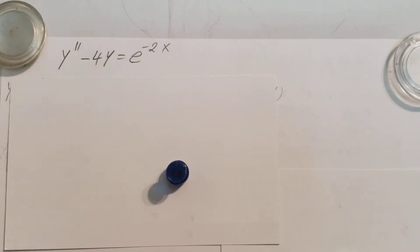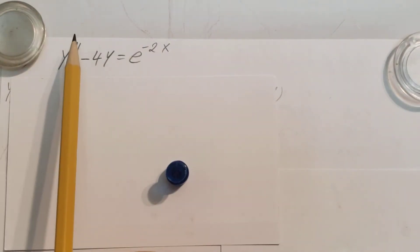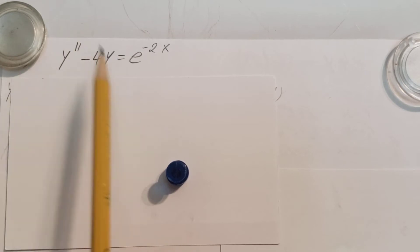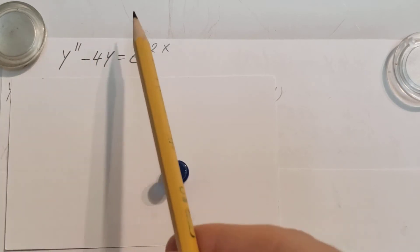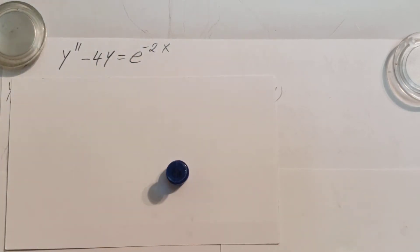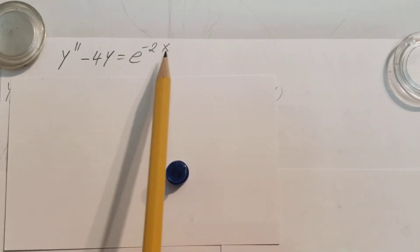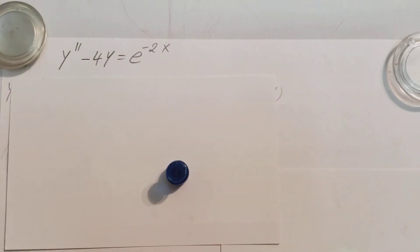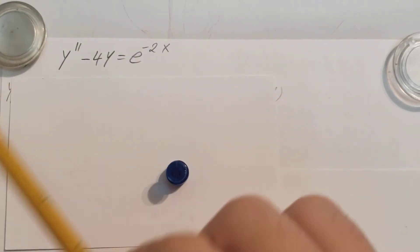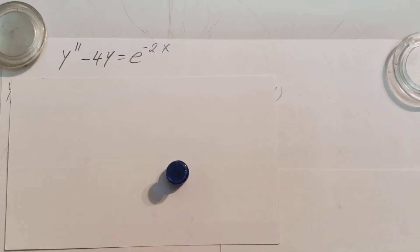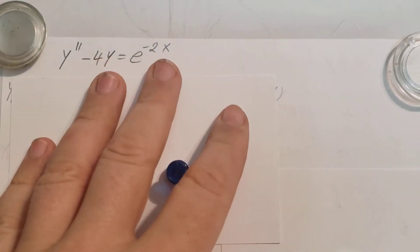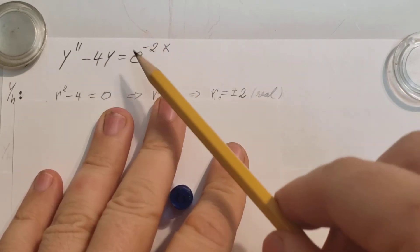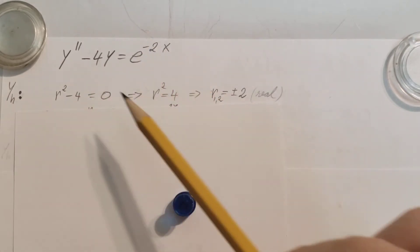Let's solve this differential equation: y double prime minus 4y equals e to the power of negative 2x. Now to start off, we see that we have a function on the right-hand side, so it's not homogeneous. So we're going to have to deal with a yh and a yp — a particular solution. But let's start with the homogeneous part, where we're going to simply ignore what's on the right-hand side.